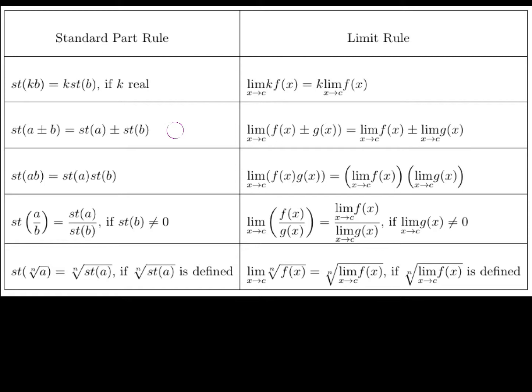Remember our rules for standard parts. For instance, if I've got a real number k, then it can slide right out or factor out of the standard part. So the standard part of kb would be k times the standard part of b, provided k is real.